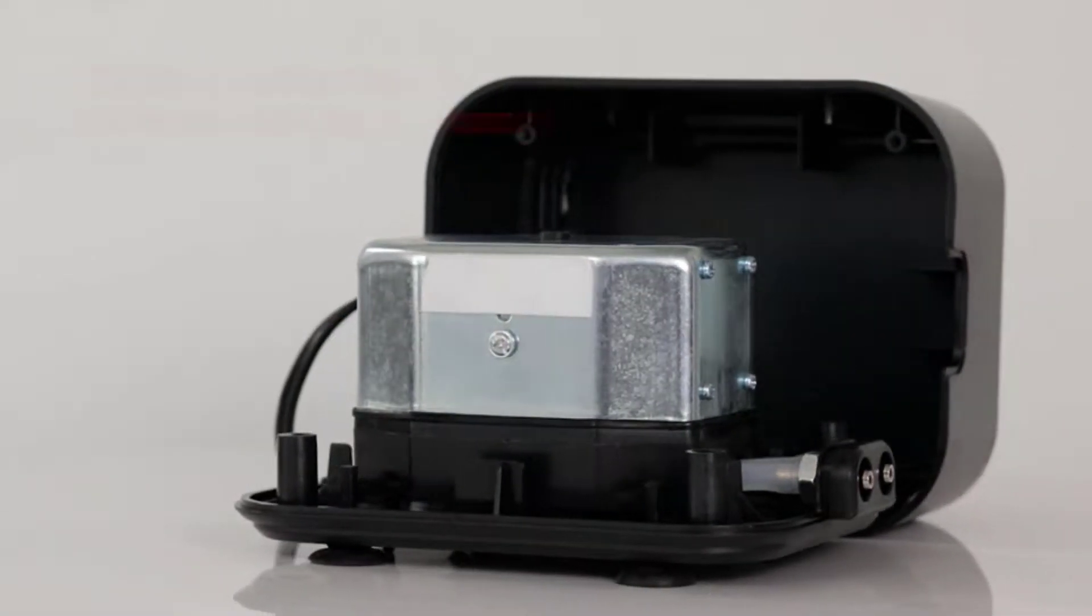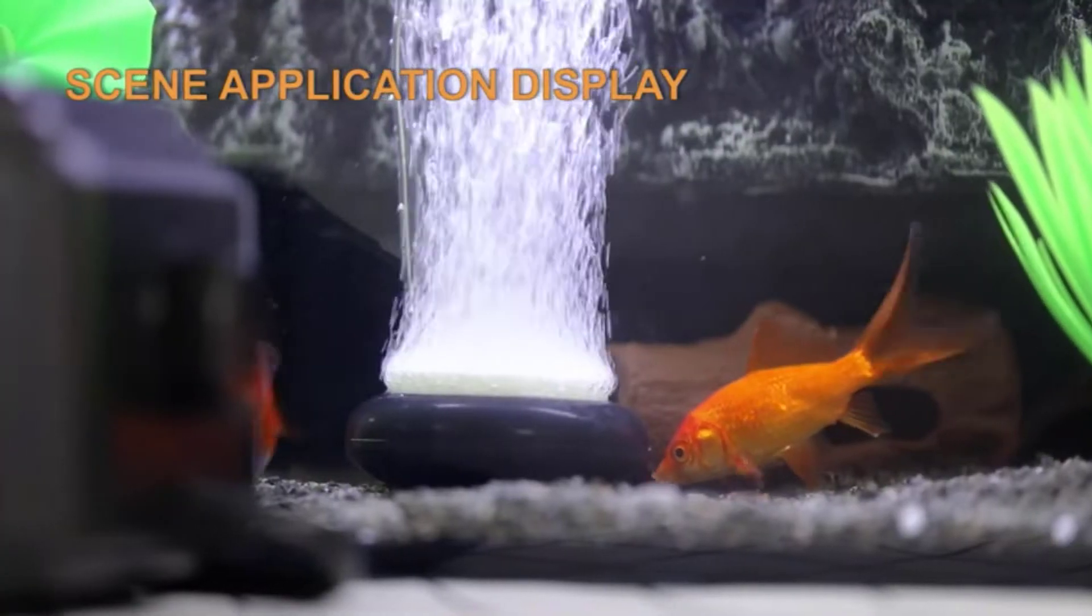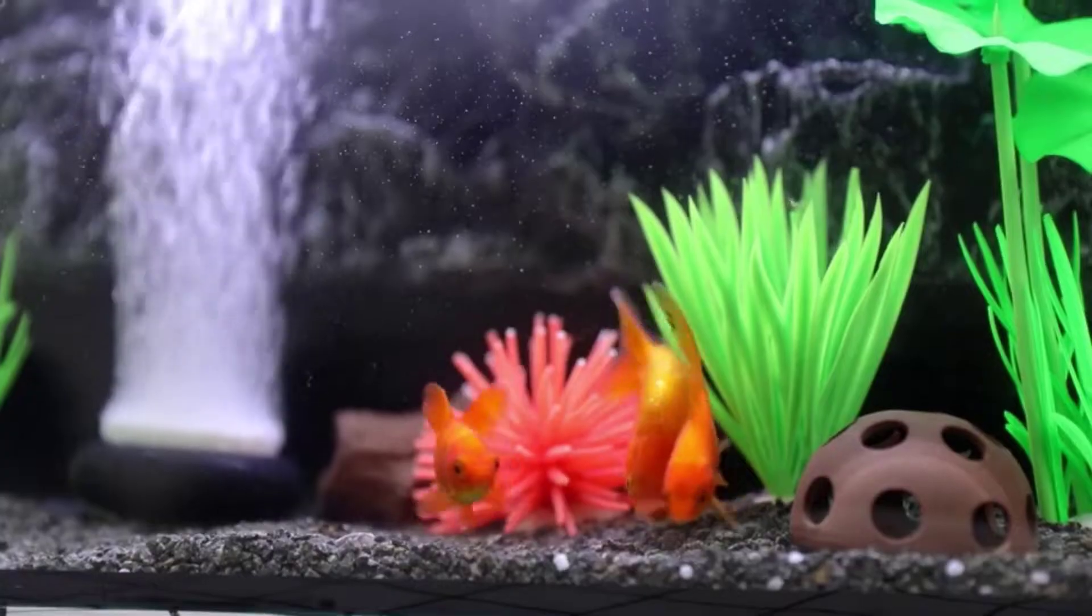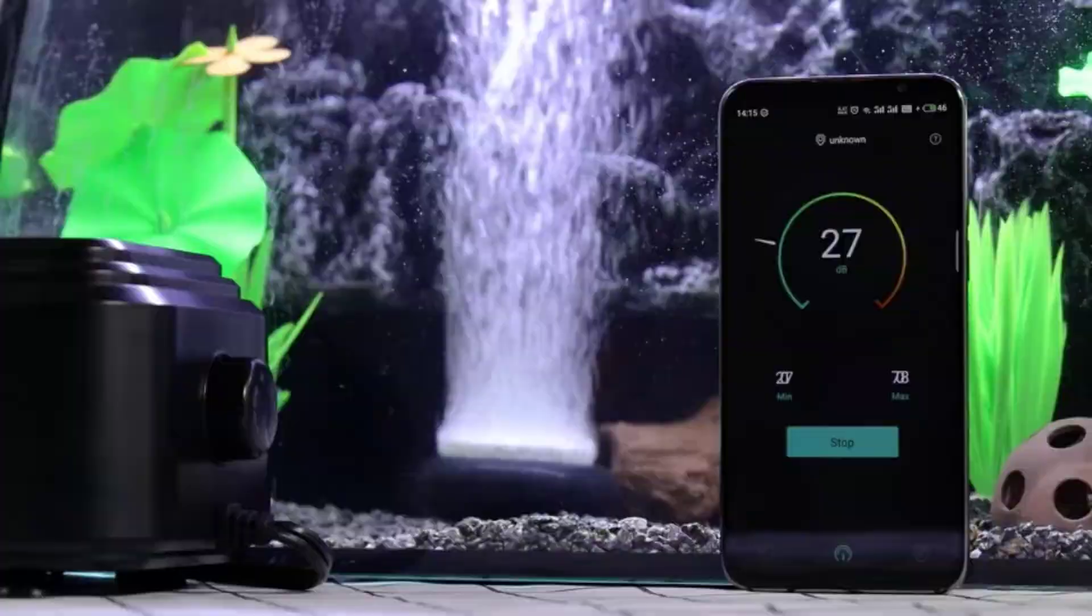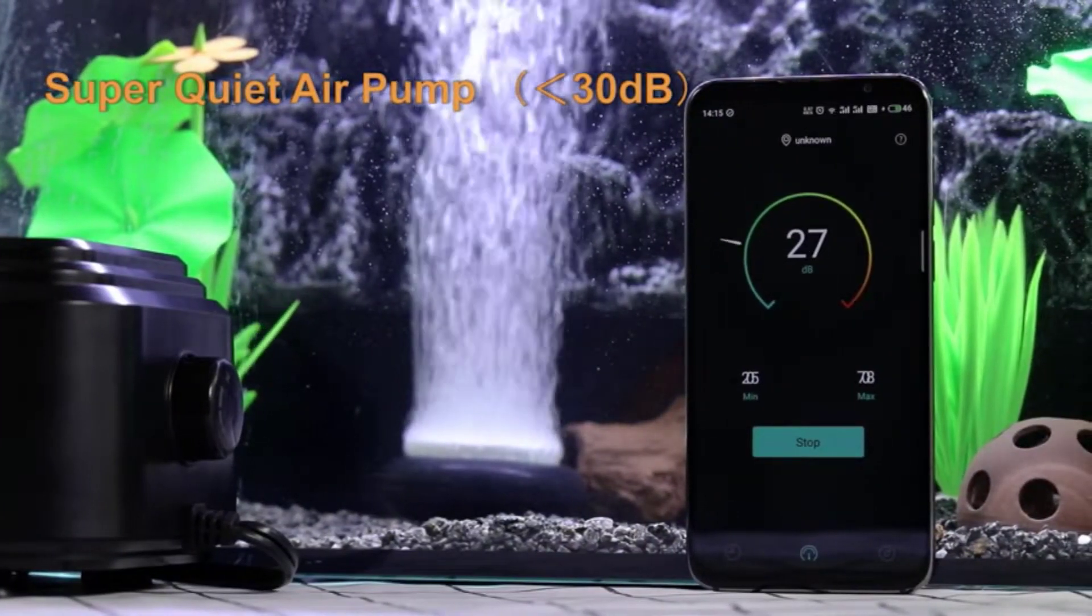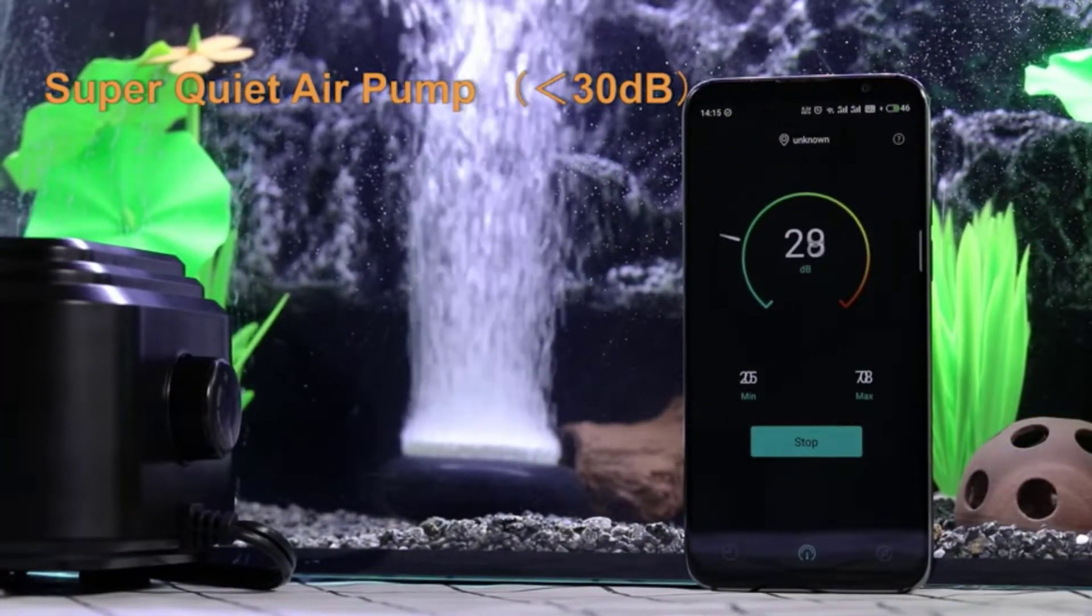As its cover is made of ABS plastic, it effectively seals in any machine noise that could disturb your home's sanctuary. It features a double air outlet pump, providing you with two efficient points of airflow.